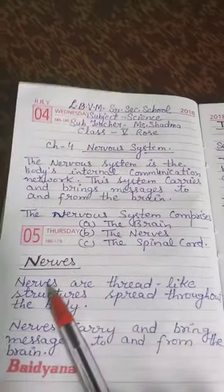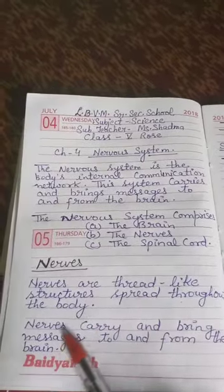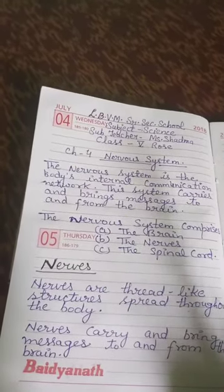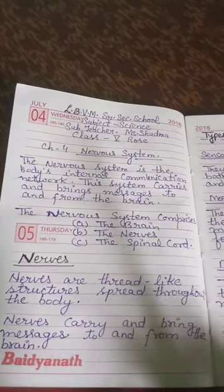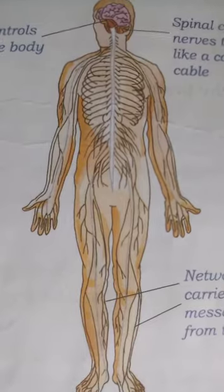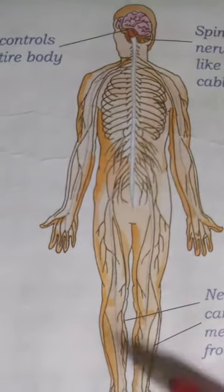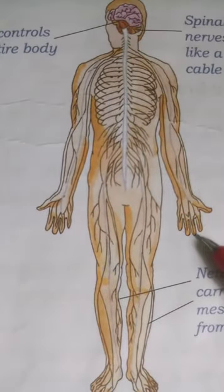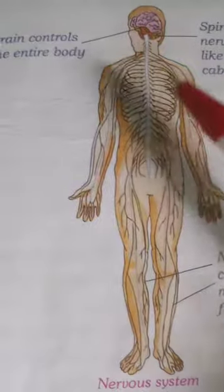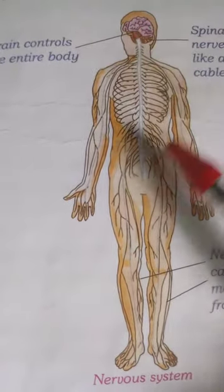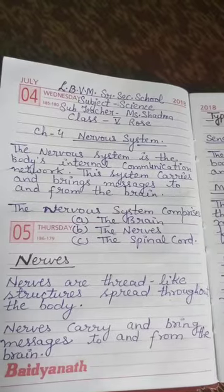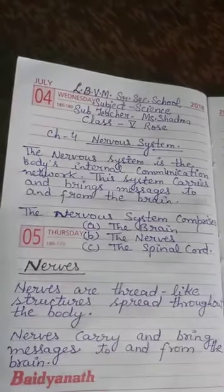The first component is the nerves. Nerves are thread-like structures spread throughout the body. If we look inside our body, we have very thin, white-coloured structures, just like thread, spreading throughout our body. As you can see in the pictures, thin filament-like structures are spreading throughout our body. These are nerves, which are connected to the spinal cord, and the spinal cord is connected to the brain.